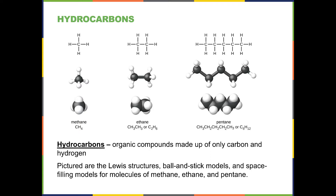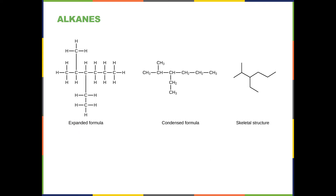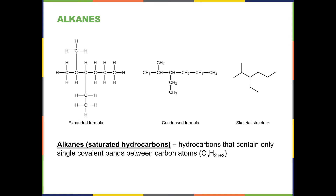Alkanes are defined as saturated hydrocarbons. Saturated means that they have the maximum number of hydrogens. There are three representations: the expanded Lewis structure, the condensed Lewis structure, and the skeletal structure, in which each intersection represents a carbon and its accompanying hydrogens. An alkane has all single bonds and its general formula is CₙH₂ₙ₊₂.